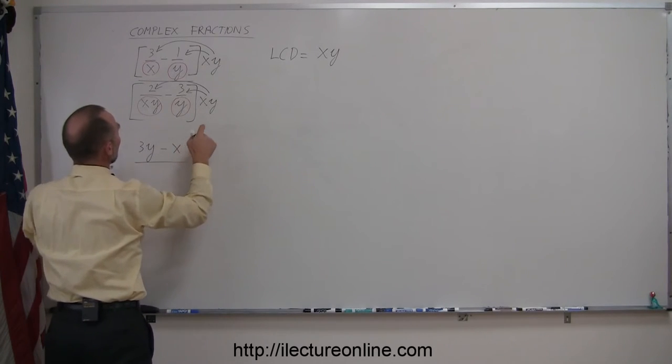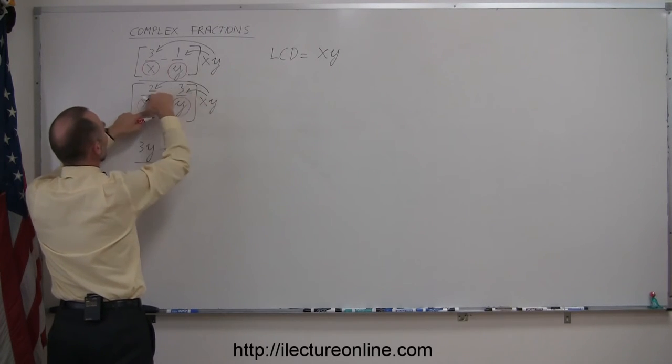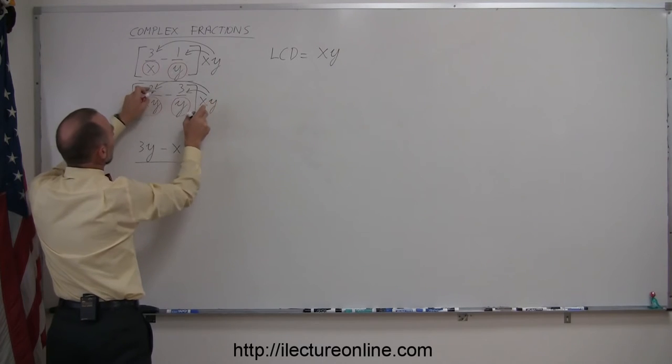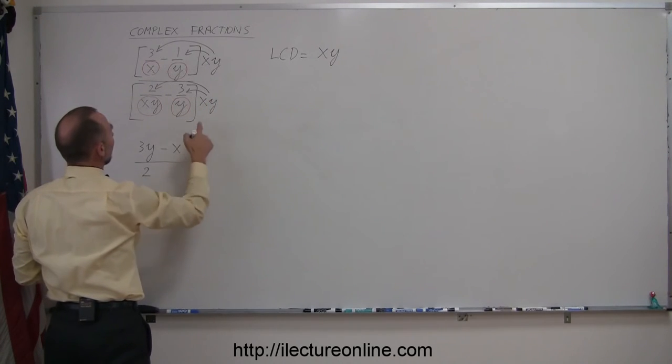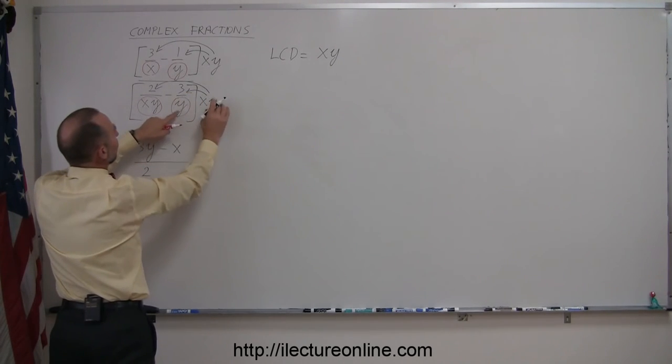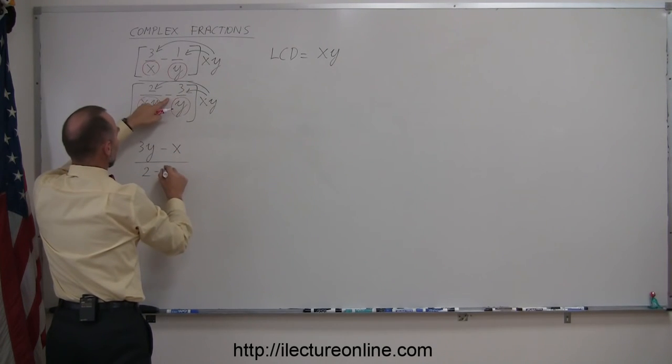In the denominator, when I multiply these two out, this times this, both x and the y cancel out, and I'm left with simply a 2. And here, when I multiply this times this, the y's will cancel out, and I'm left with 3 times x. Don't forget the minus, so minus 3x.